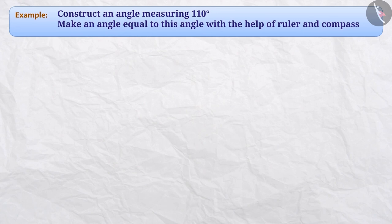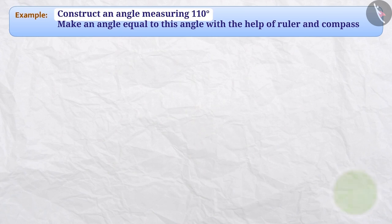Next example: Construct an angle measuring 110 degrees. Make an angle equal to this angle with the help of ruler and compass. Here, we have to make an angle of measurement of 110 degrees. We know the measurement of the angle, so we will be able to make the angle from the given measurement. Absolutely right — we have seen this in a previous video. Let us go through it and make an angle of 110 degrees.